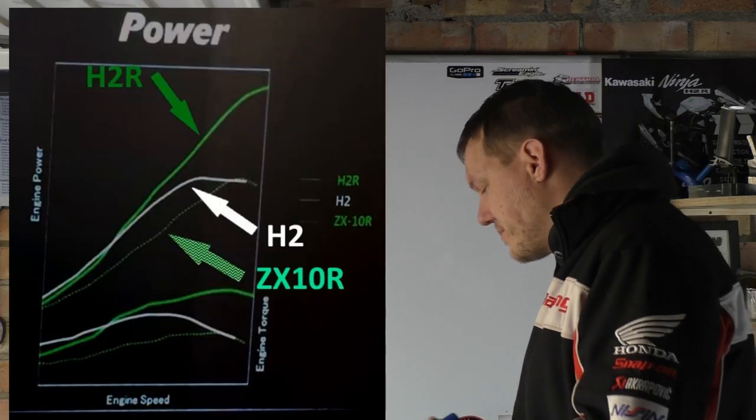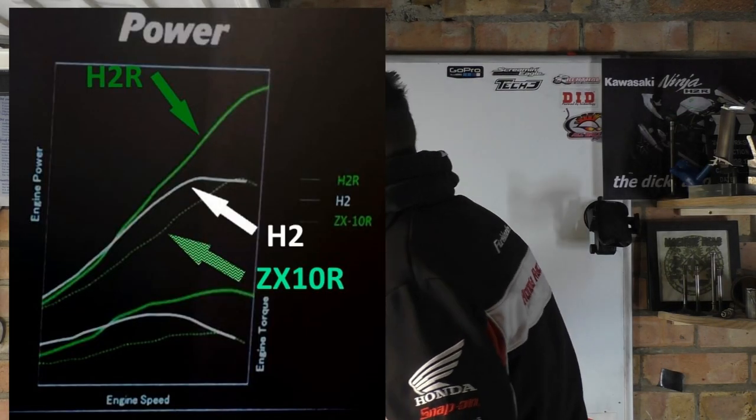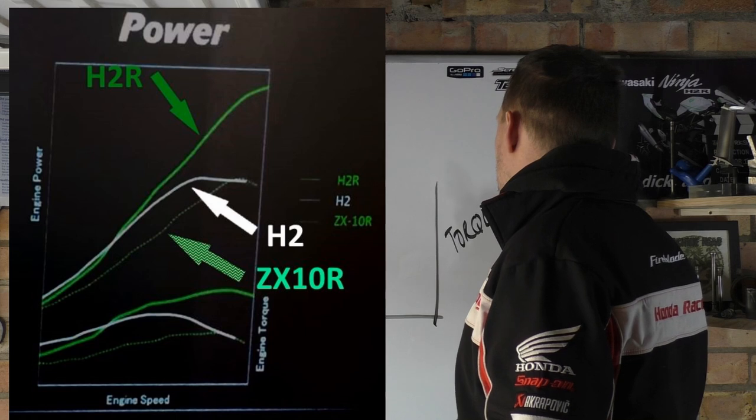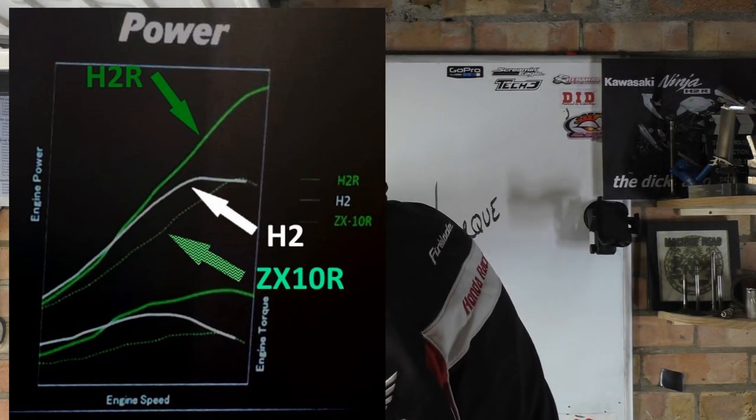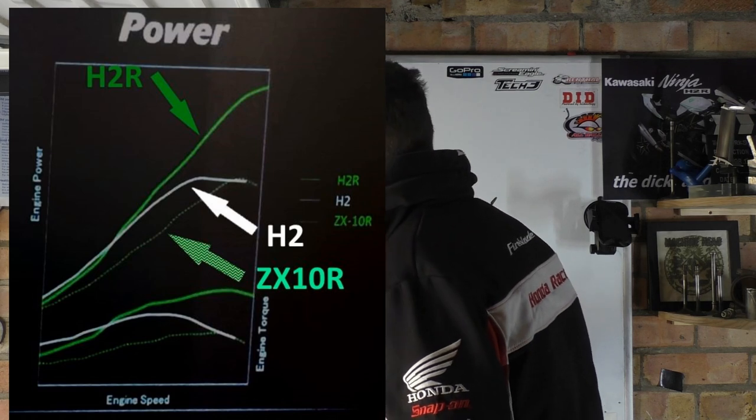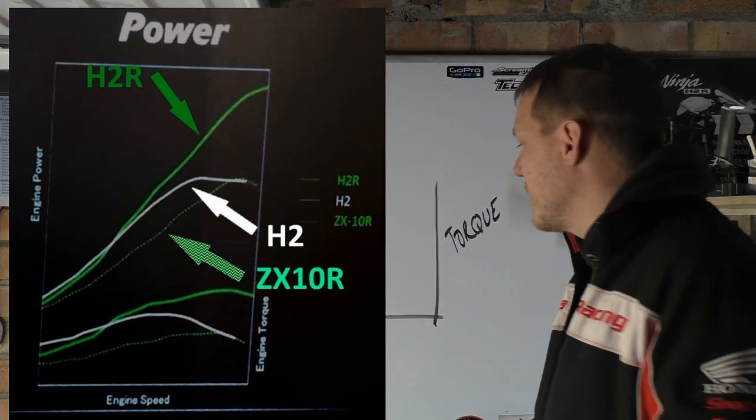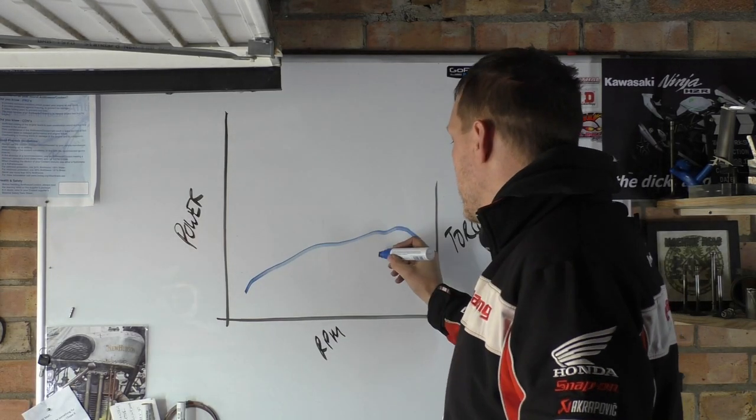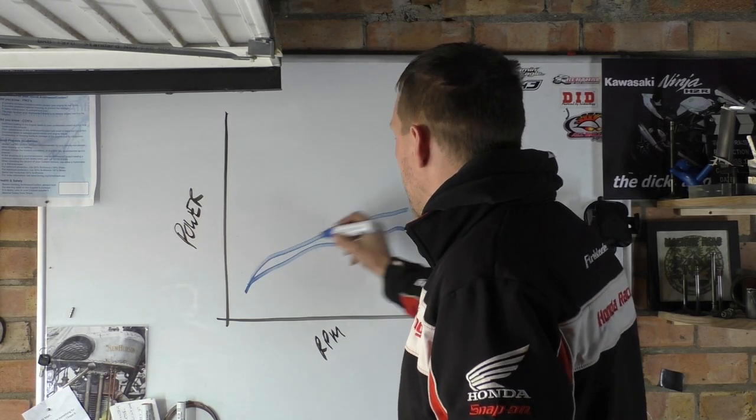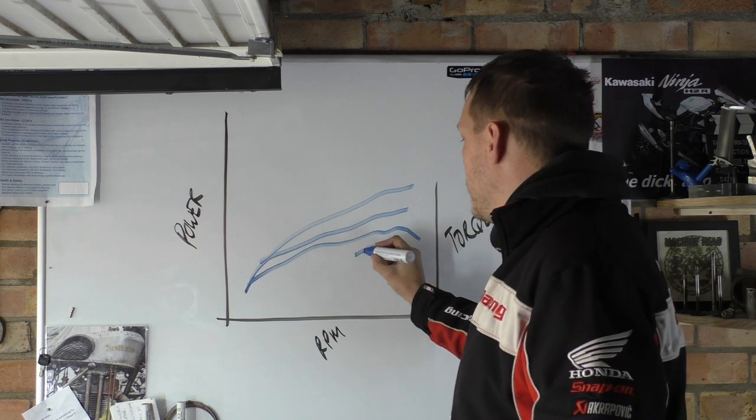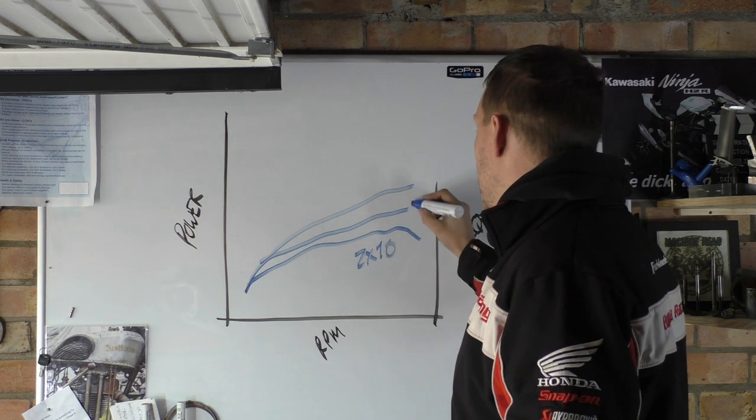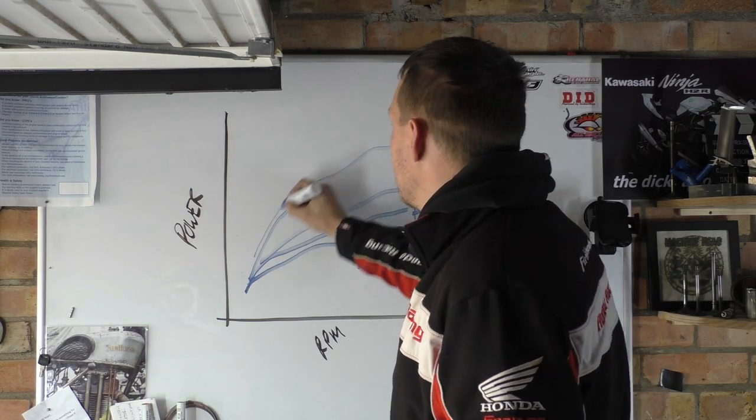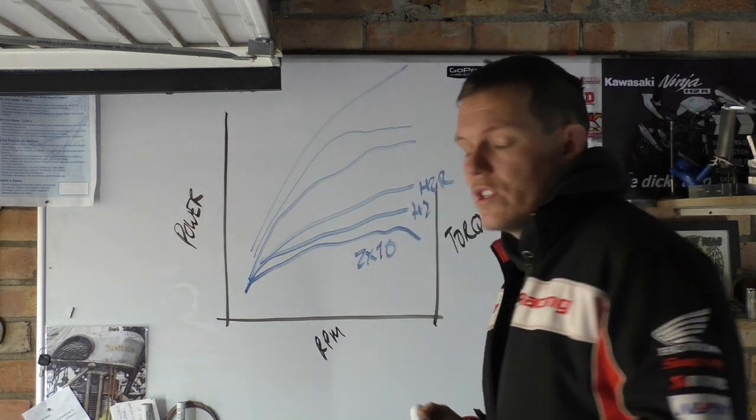What you can see on there is a graph. I think it's torque on this side and power on this side, and then RPM, pretty much your standard dyno graph. It has the torque curve of all of them, and we've got the ZX10 which is made by Kawasaki, the H2 and the H2R. Then we look at the power and the H2R just goes fucking straight up.